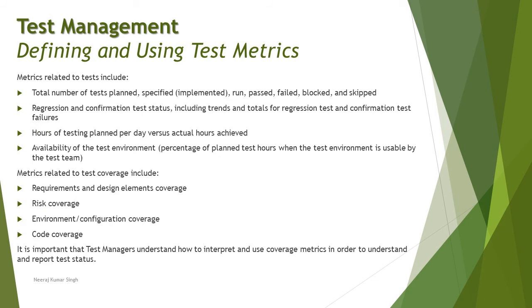Similarly, for the test dimension, there are many metrics available. For example: total number of tests planned, specified (implemented), run, passed, failed, blocked, or skipped. This is completely specific to test cases written or test scripts executed, tracking the status of each. Regression and confirmation test status — including trends and totals for regression test and confirmation test failures — is another important metric.